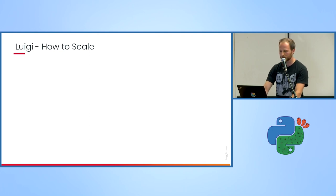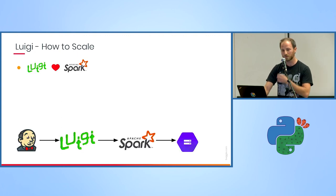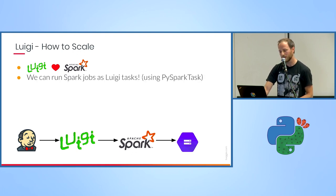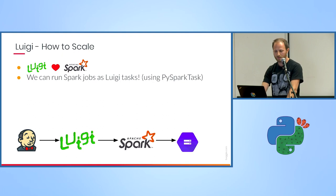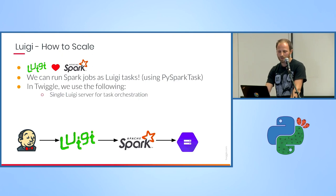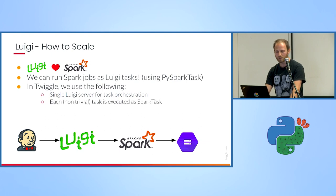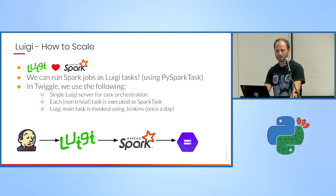How can we scale this? There are many ways, but at Twiggle we mainly use Spark because Luigi works really nicely with it. Instead of extending Luigi task, we can extend PySpark task, and if we define the Spark cluster it just runs in the cluster. We use the following setup: a single Luigi server for task orchestration, each non-trivial task executed as a Spark task in our predefined cluster, the main Luigi task invoked using Jenkins once a day, and we use Google Cloud Storage as our data lake.